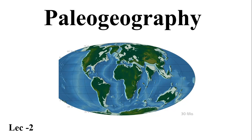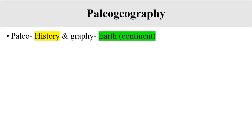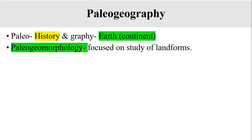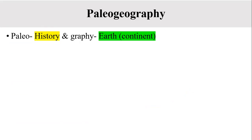First, we will discuss what is paleogeography. It comprises two words: paleo means history and graphi means earth or continent. It actually describes the history of the Earth, dealing with past continents and present continents — either both are the same or different.